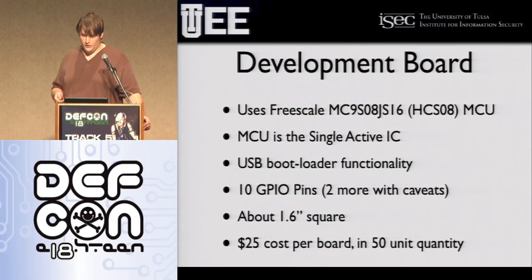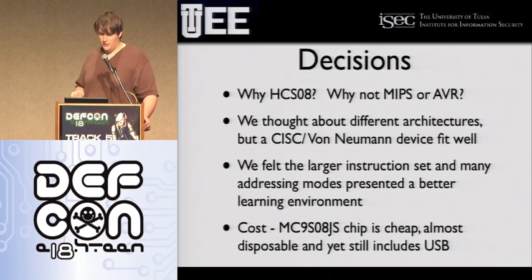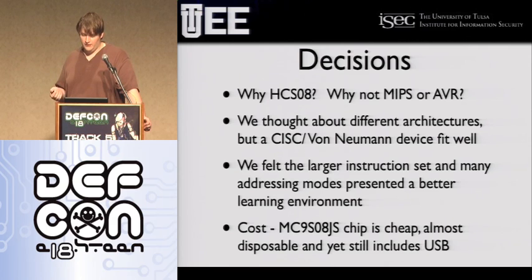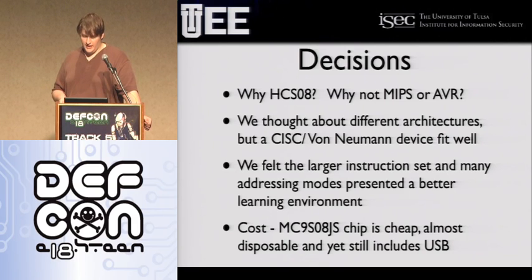We made 50 of them for $25 each. When we were doing this we had to make a lot of decisions about what to use. A lot of the textbooks for computer organization use MIPS and we kind of abandoned that and went with what we knew, which would be more difficult to teach but gives people a better understanding of assembly language. The instruction set for HCS08, which is the processor on the development board, is a little more complicated than something like MIPS assembler but it's more similar to X86. It's got a lot of instructions and a lot of addressing modes. The chip is ridiculously cheap — it's almost disposable. We were expecting students to fry the chip and need a replacement and it will still be cheap to fix.